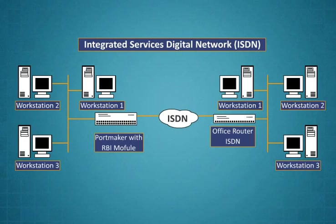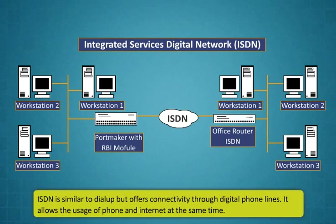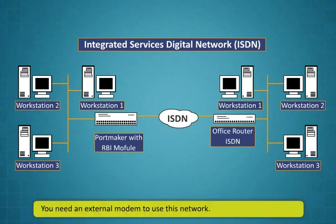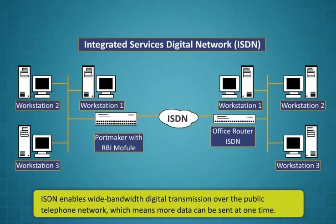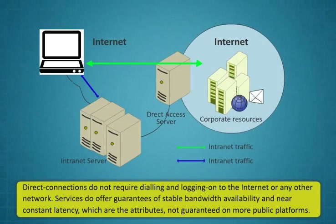Integrated Services Digital Network, or ISDN, is similar to dial-up but offers connectivity through digital phone lines. It allows the usage of phone and internet at the same time. You need an external modem to use this network. ISDN enables wideband digital transmission over the public telephone network, which means more data can be sent at one time. Direct connections do not require dialing and logging on to the internet or any other network. Services do offer guarantees of stable bandwidth availability and near constant latency, which are attributes not guaranteed on more public platforms.